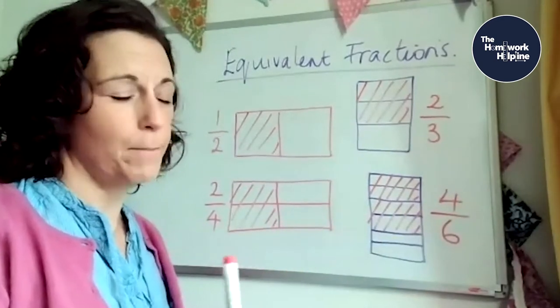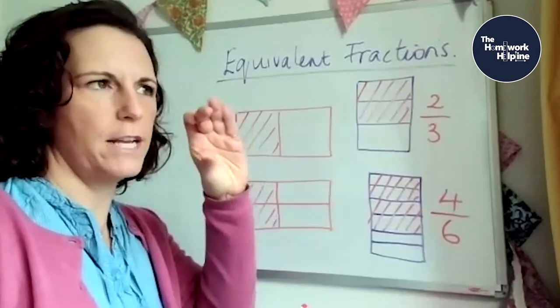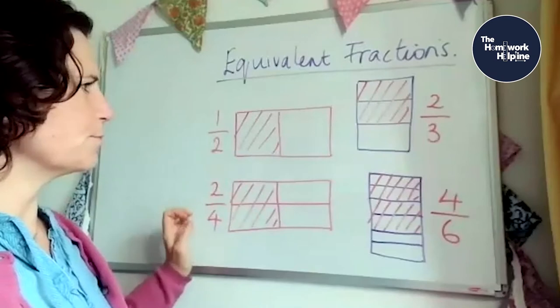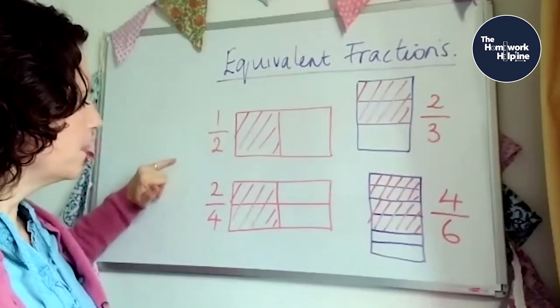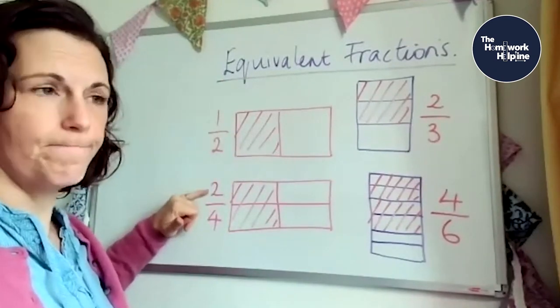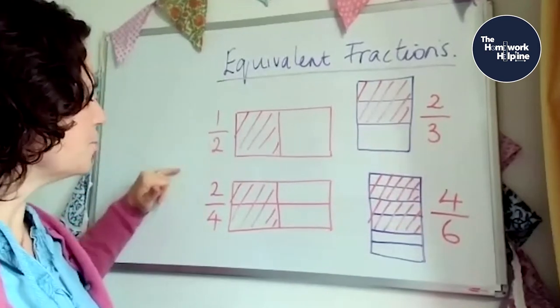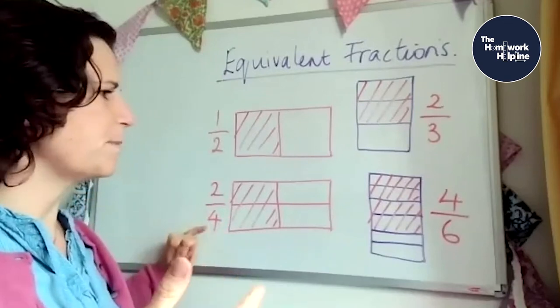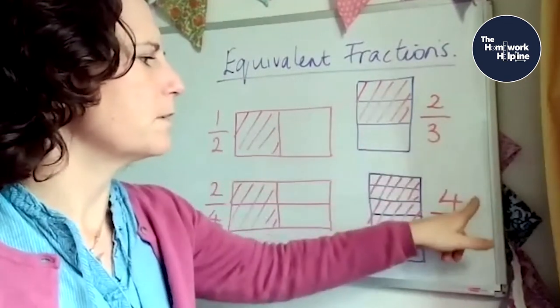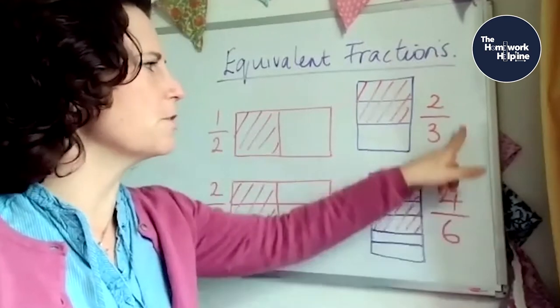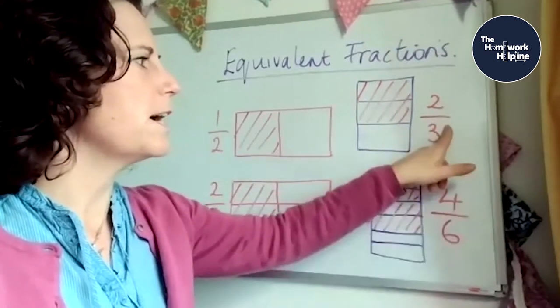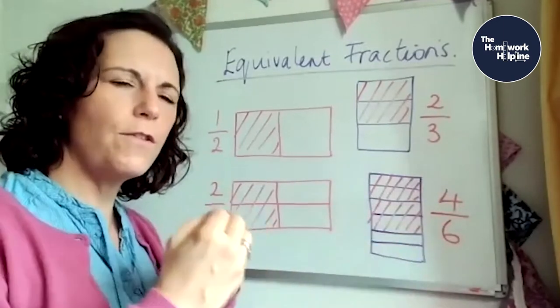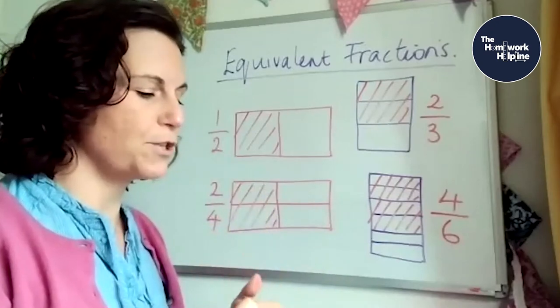Now the important learning point here is what we do to both the numerator and the denominator. So if you look at both my examples, one has turned into a two. So we've doubled it, it's times by two. The two has turned into a four. So that has also doubled, or times by two. This one, times by two again, we've got two times two is four, and three times two is six. So do you see what we do to the top number, we must also do to the bottom number.